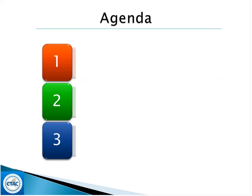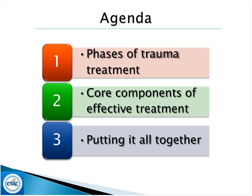Our agenda today is to first look at the phases of treatment and, looking across different evidence-based practices, what are some of the common phases that we find? As you've probably been exposed to different trauma treatment approaches, such as trauma-focused CBT, trauma systems therapy, or the AHRQ model, you've probably noted that while there are some differences, there are definitely similarities in terms of effective treatment components. We'll go deeper into what those components are and then wrap up by looking at how you put it all together — when to transition to the next phase, when a child is ready, and when you're ready for discharge.